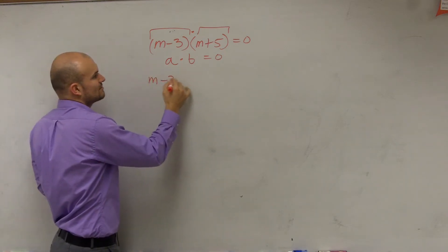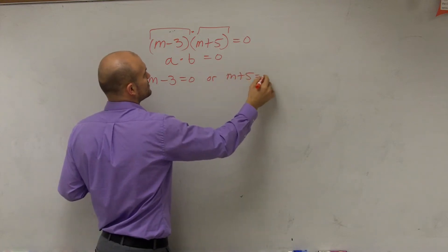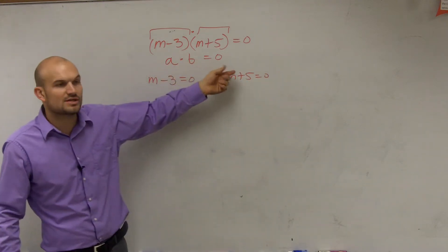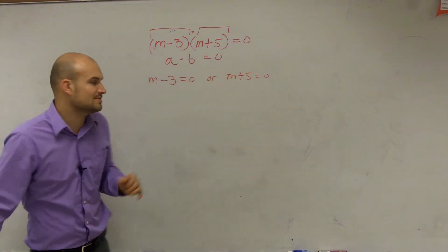So therefore I can say m minus 3 equals zero or m plus 5 has to equal zero. Because think about it, if a times b equals zero, one of them has to be zero. So that means I just set them both equal to zero and solve.